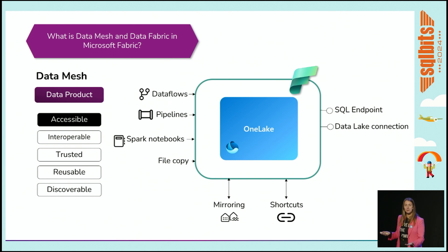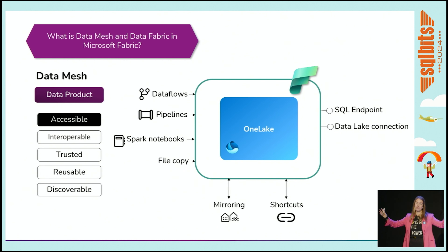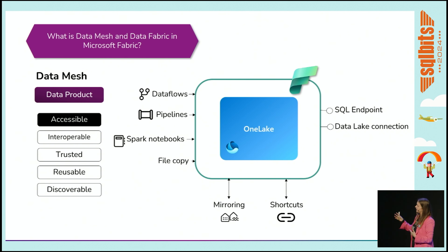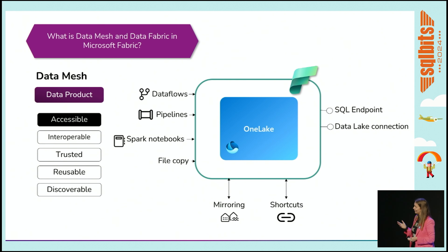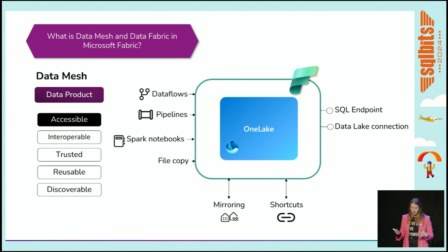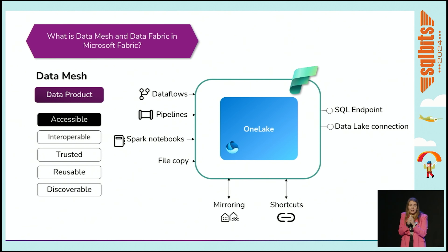Accessibility is made available through OneLake — the foundation of where you store all your data in Microsoft Fabric. You have one OneLake for your entire tenant, which enables standardization on how we access and pull data. You can use data flows, pipelines, Spark notebooks, and copy files. You can pull data out via SQL endpoints or data lake connections, and semantic models are reusable on their own since you can build multiple reports on top. OneLake is the most enabling feature of Fabric.